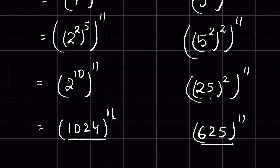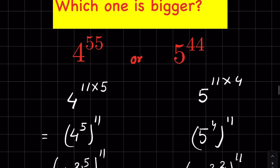Now we have the same exponent 11 on both sides, so we can compare directly. Obviously 1024 is bigger than 625, which means 4 raised to the power 55 is bigger than 5 raised to the power 44. How did you solve the problem? Let me know in the comment section. Please like and subscribe — thanks for watching!